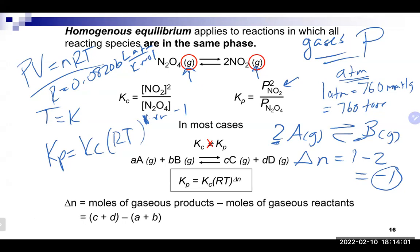Delta N is products minus reactants, counting only gas molecules using their coefficients. You need gas molecules to write a Kp expression. In most cases it'll either be all gas molecules, or a combination of gases and solids or liquids — which we'll discuss.